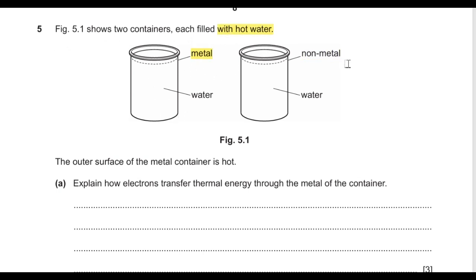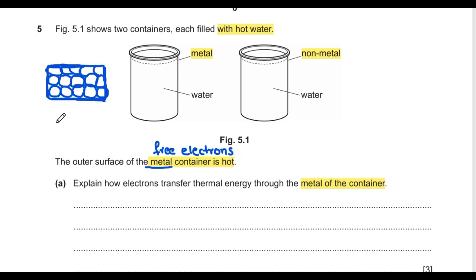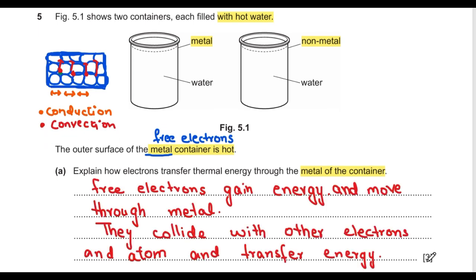Question 5: the outer surface of the metal container is hot. Explain how electron transfer conducts thermal energy through the metal. Metals have free electrons in their lattice structure. These free electrons gain energy, move through the metal, and collide with other electrons and atoms, transferring energy throughout the metal.